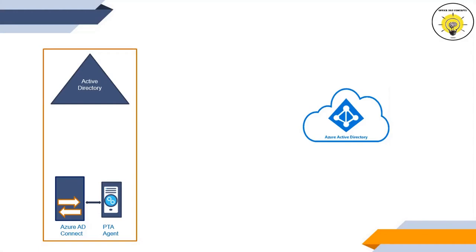Pass-through authentication works only for synchronized user accounts. This feature cannot be used for cloud-only accounts. Let's assume that we have synchronized a user from local Active Directory to Azure Active Directory, and this user is trying to access the Outlook web application in Office 365. Let's see how pass-through authentication will work and how this user will be authenticated.